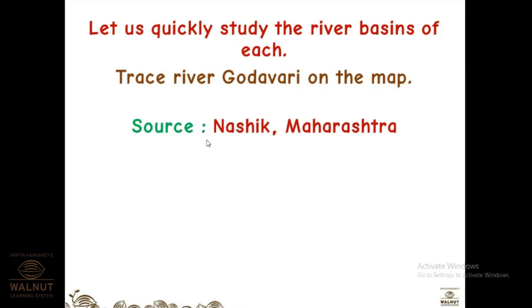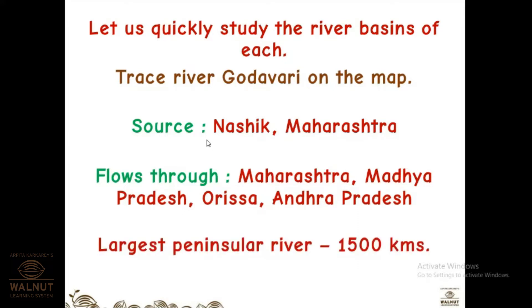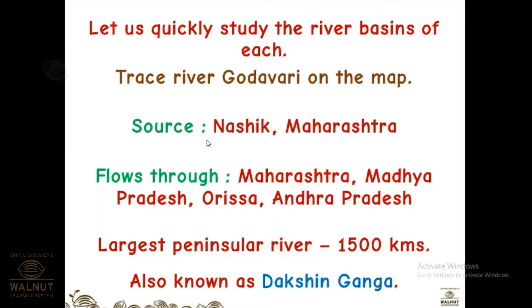Godavari — the source is Nashik in Maharashtra. It flows through Maharashtra, Madhya Pradesh, Odisha, and Andhra Pradesh. It is the longest peninsular river, with a length of 1500 kilometers. It is also known as Dakshin Ganga. Dakshin means south — just as Ganga is the largest river in the northern plains, Godavari is the longest river in the southern region.